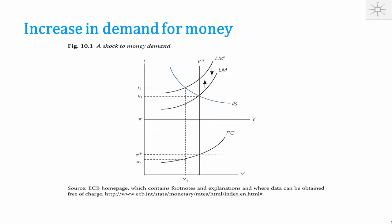You need more monetary base to carry out the transactions. Looking at the equations, you realize that means the LM curve shifts up. The LM curve is drawn for a given supply of money, so if the central bank keeps the money supply constant, we go from a situation where the interest rate is I₀ and production is on its natural level, to a situation where the interest rate is I₁ and production is below the natural level. Since production falls, inflation will fall below the inflation target.